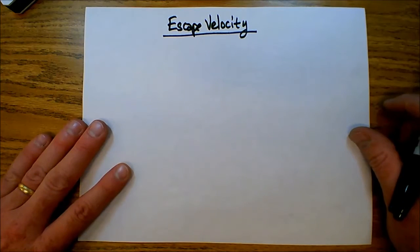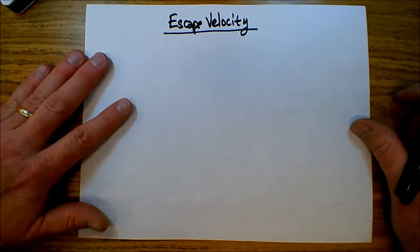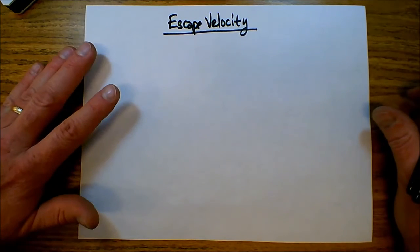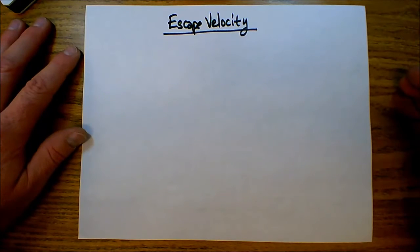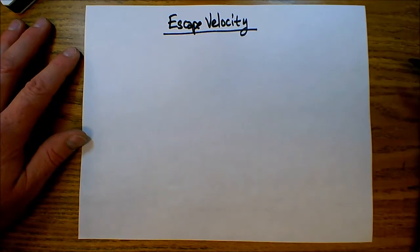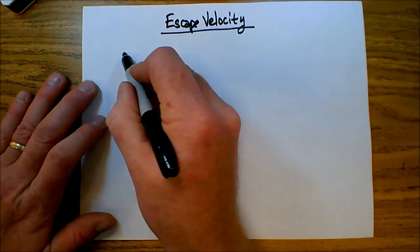Another example of a planetary gravity type of problem has to do with what we call escape velocity. Now escape velocity is defined as the velocity at which, if you were to propel an object with this velocity, it would simply move away from the planet and never return. It would be fast enough to escape completely the effect of gravity.